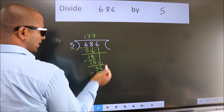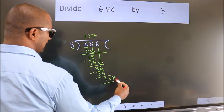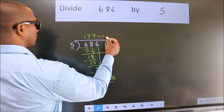No more numbers to bring it down. So we stop here. This is our remainder. This is our quotient.